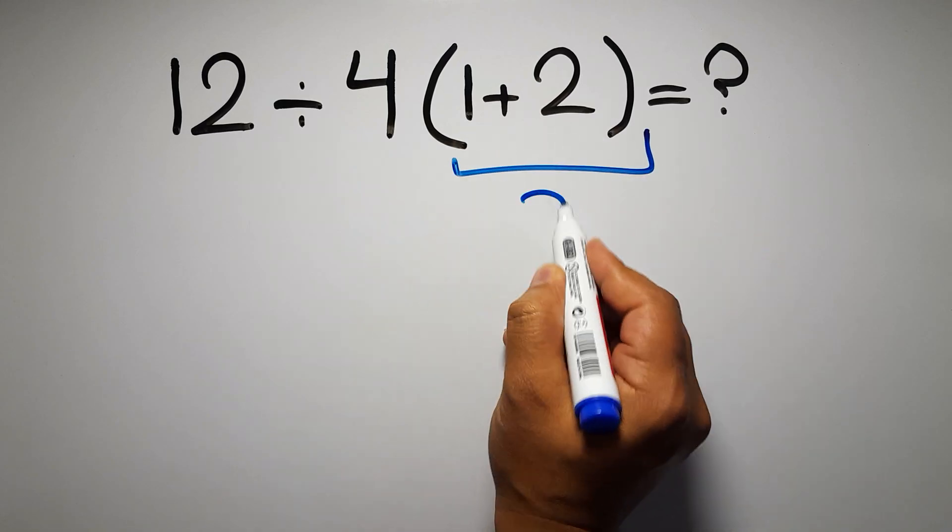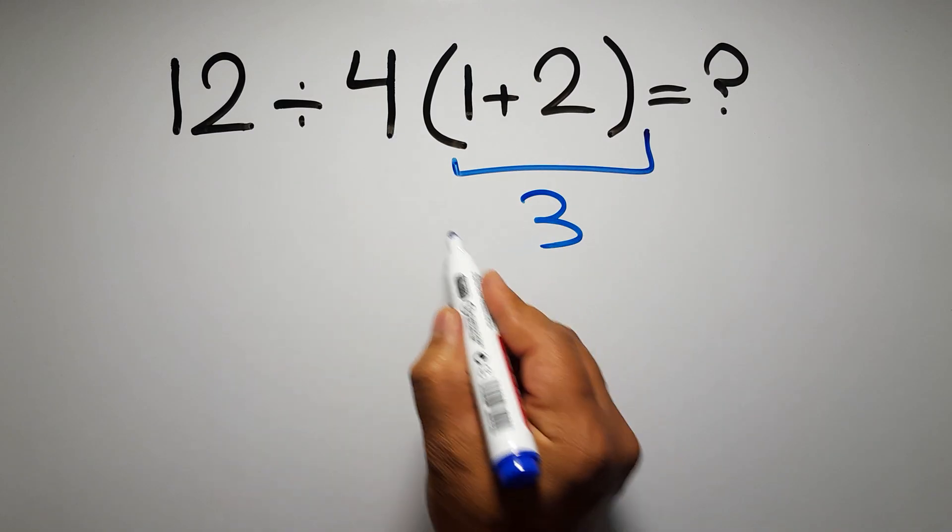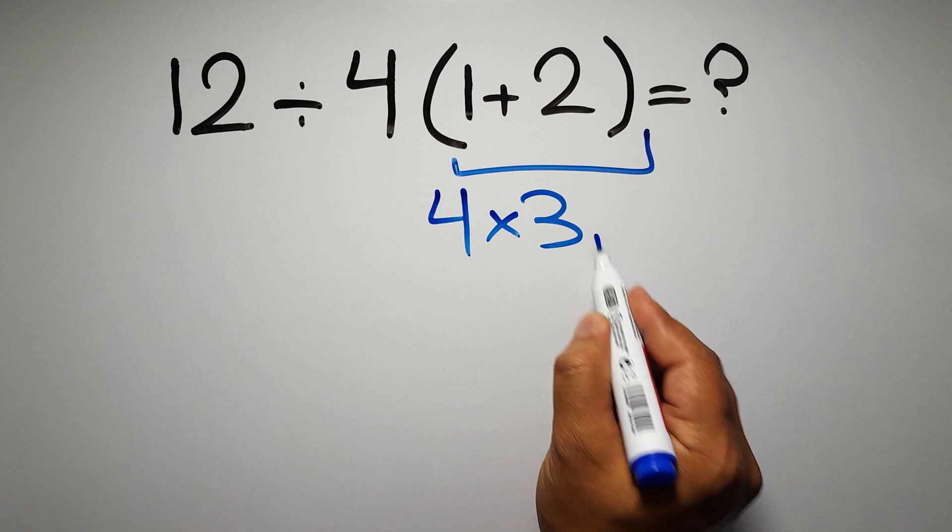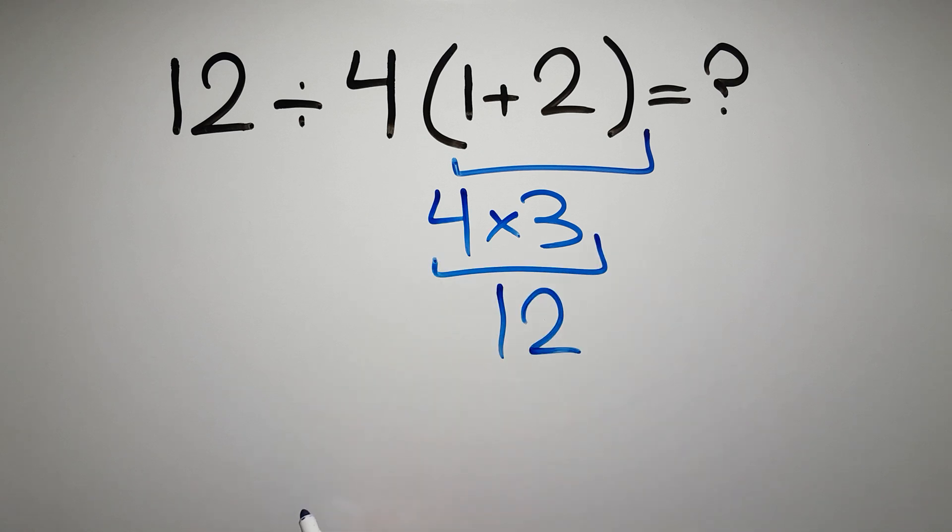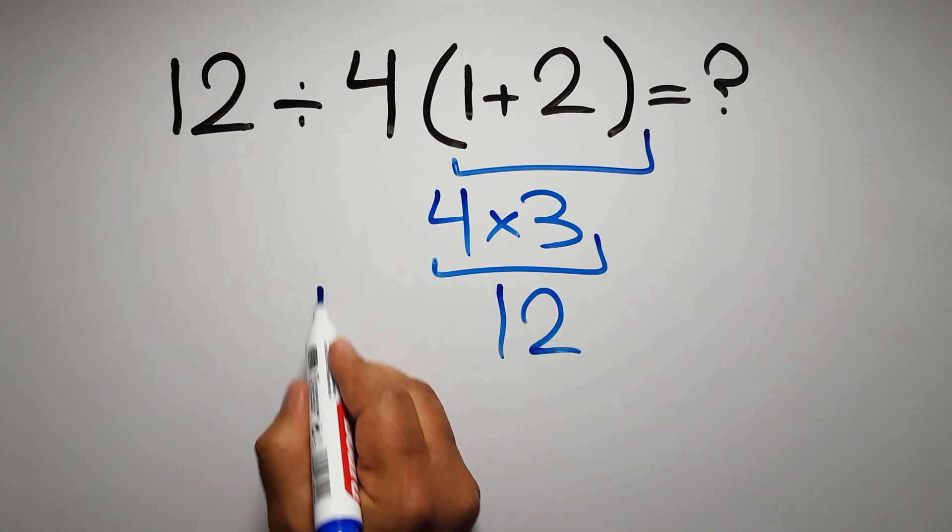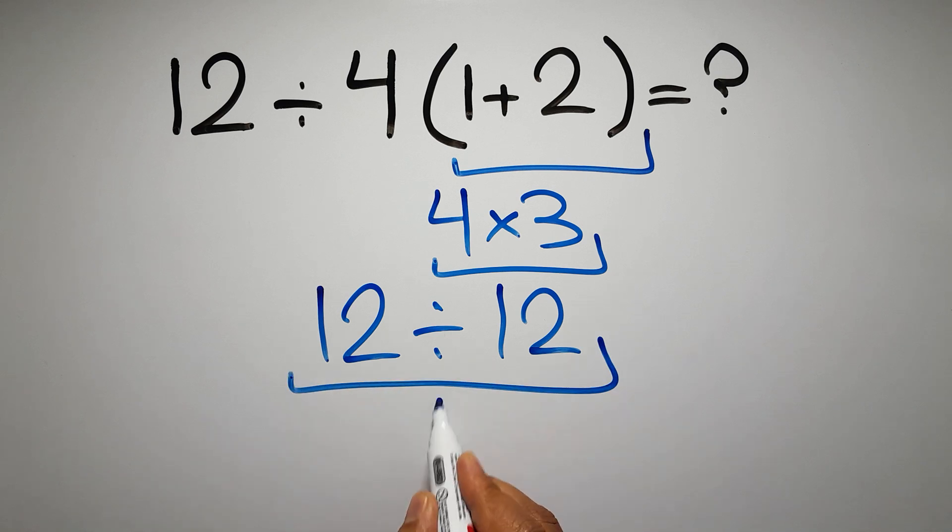1 plus 2 gives us 3, and 4 times 3 equals 12, so 12 divided by 12, which equals 1.